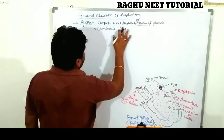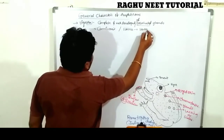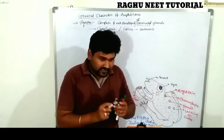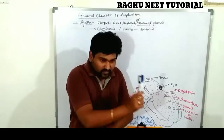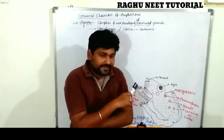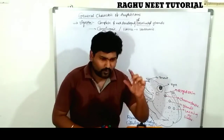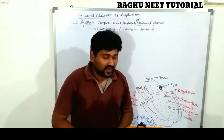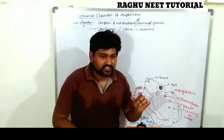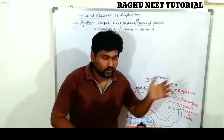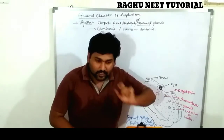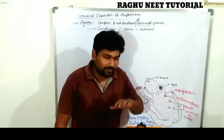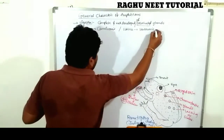Larvae of amphibians are herbivorous. After mating, male and female gametes combine to form a zygote, which develops into larvae. The larvae then converts into an adult through a process called metamorphosis — 'meta' meaning multiple changes. This metamorphosis activity is controlled by the thyroxine hormone.